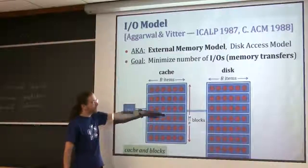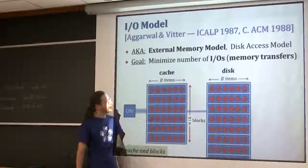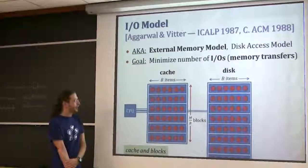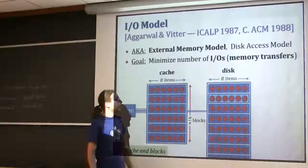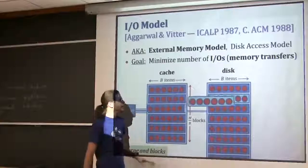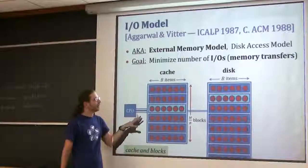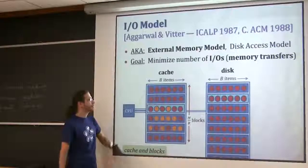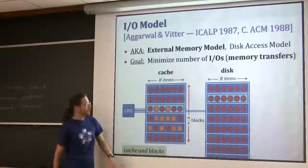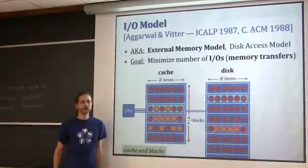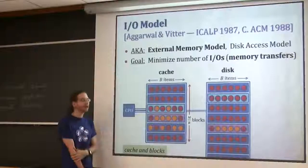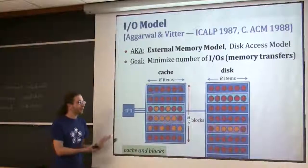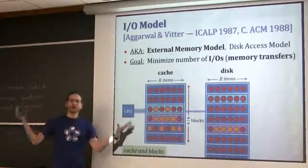Our goal is to minimize the number of IOs - it's just the fusion of the two models. Now our cache has blocks of size B, and you have M over B blocks. Your disk is also divided into blocks of size B - we imagine it being as large as you need. You can pick up one of these blocks and read it in from disk to cache, do computation internally for free, and then take one of these blocks and write it back out to disk. This turns out to be a really good model - the other two models were interesting toys. This spawned this whole field.